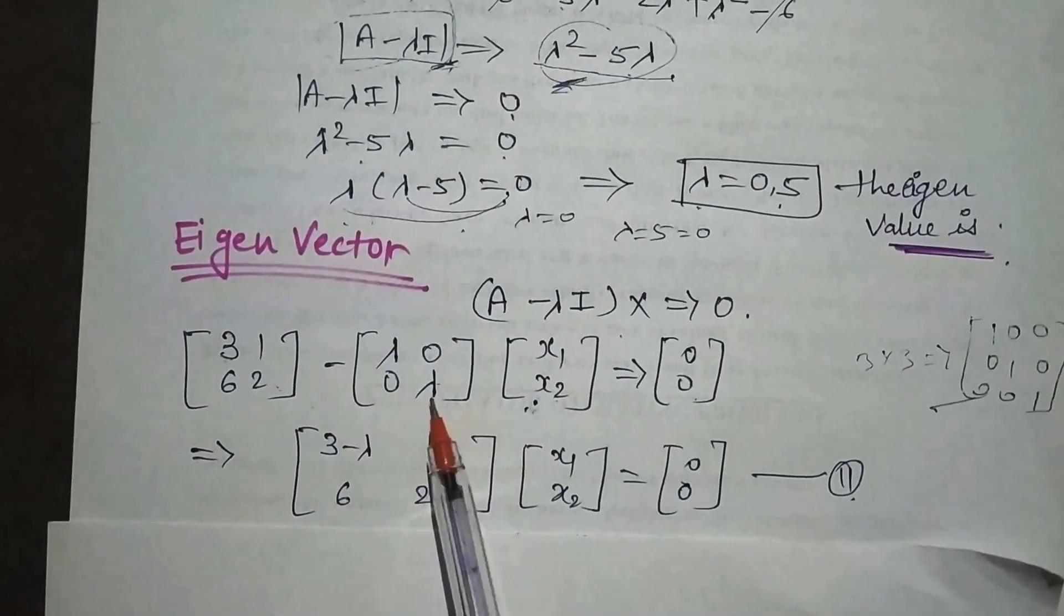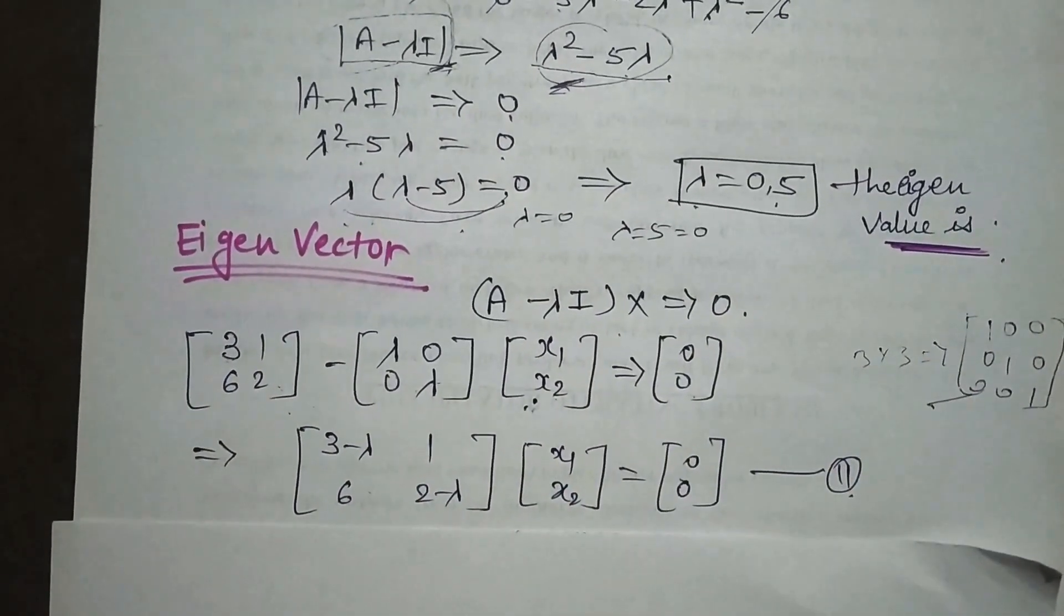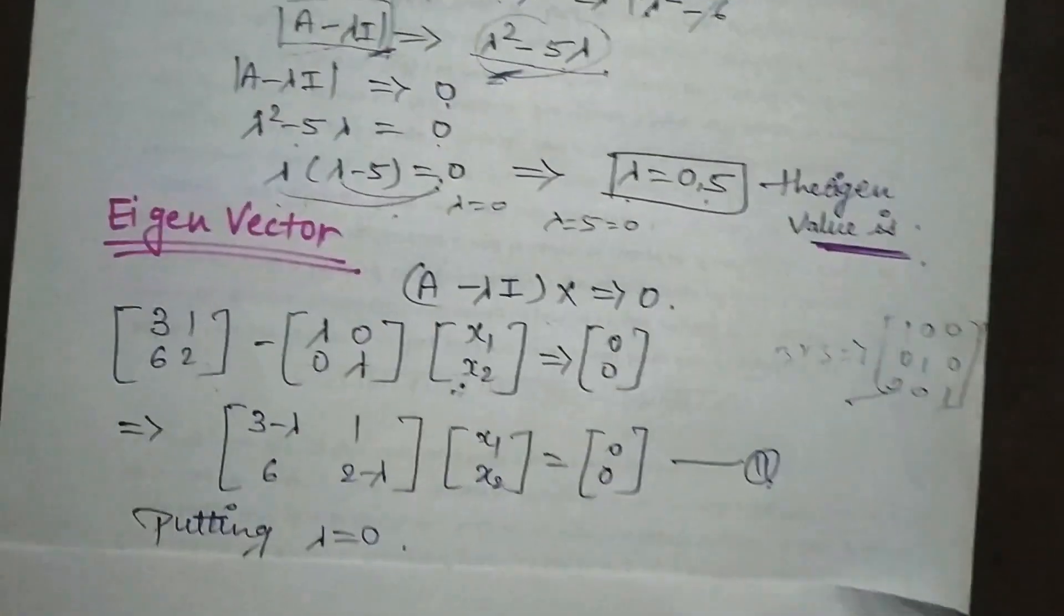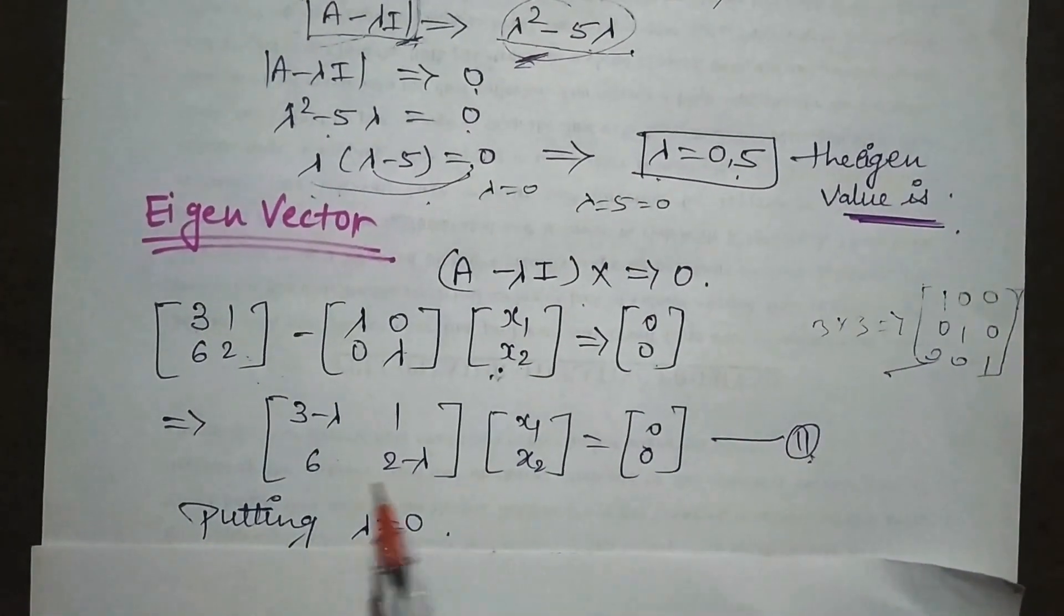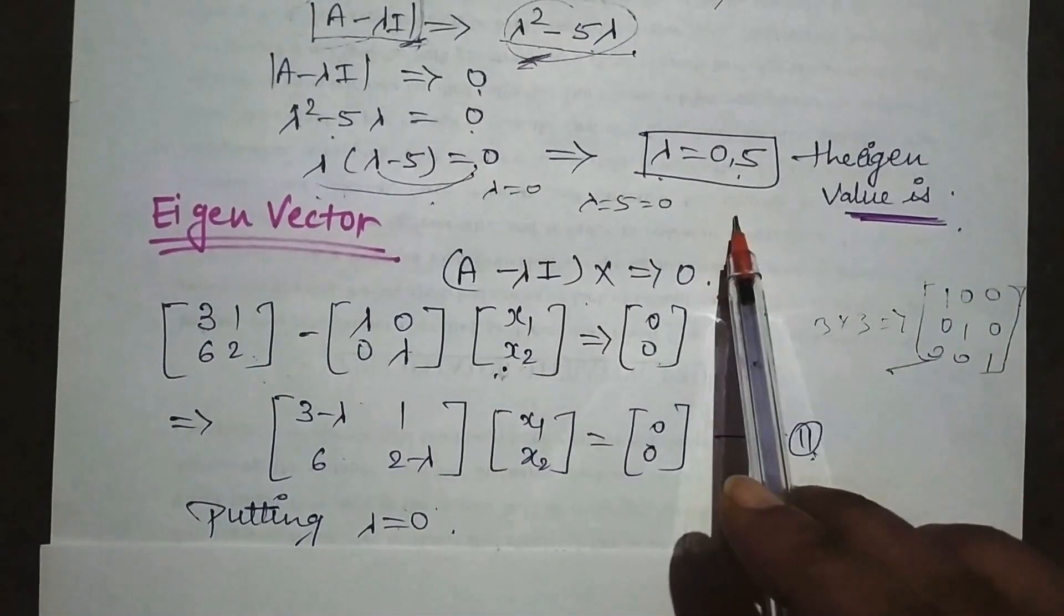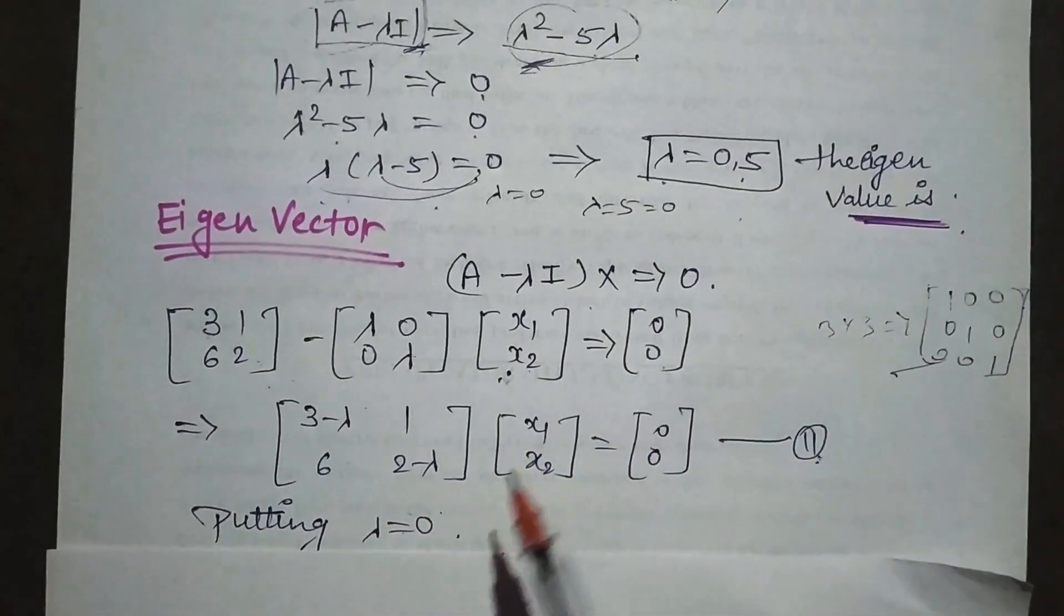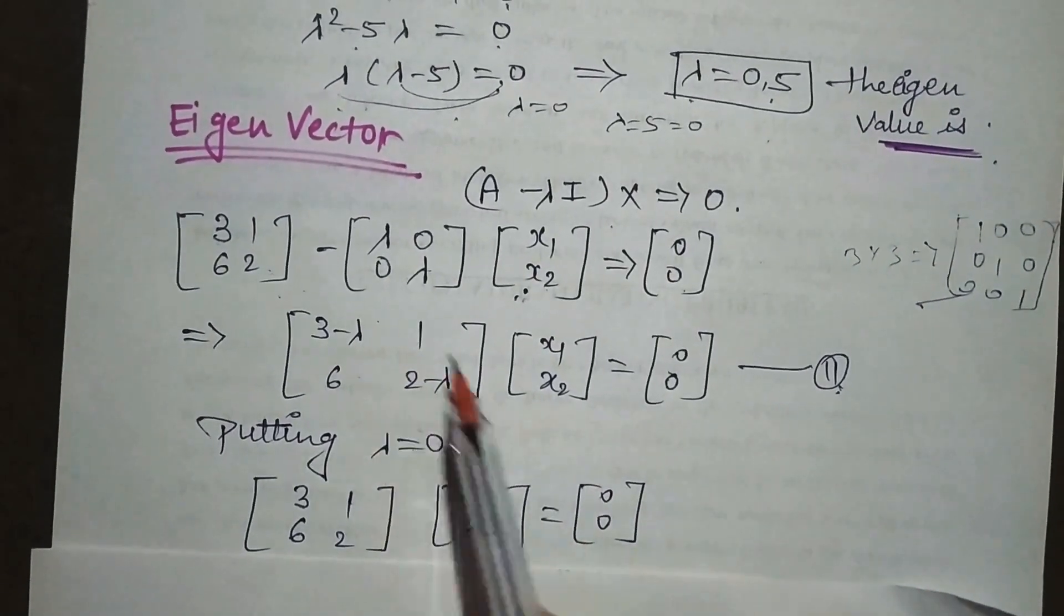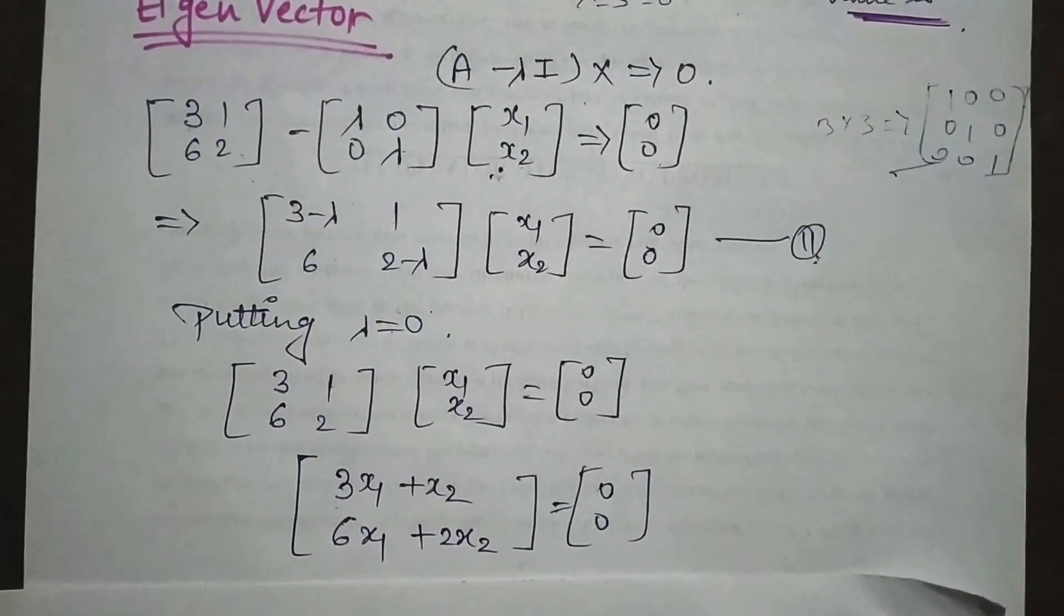We perform the same operation here. We subtract these two matrices. This is your equation. To find the eigenvector, we need the eigenvalues because we must put lambda's value here. We have two eigenvalues, we will put them one by one. First, we put λ = 0. When you put zero here, this becomes zero.